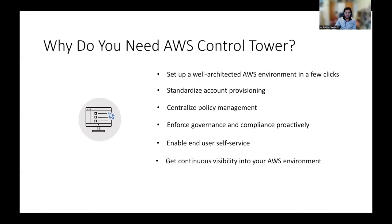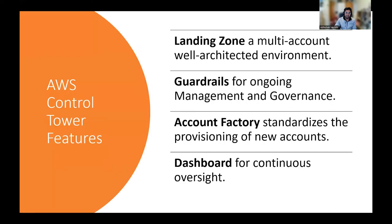Let's talk about some of AWS Control Tower's top features. The top four features are: landing zone, guardrails, account factory, and the dashboard. A landing zone is a well-architected multi-account AWS environment that is the starting point from which you can deploy workloads and applications. The landing zone creates a multi-account AWS environment using AWS Organizations.